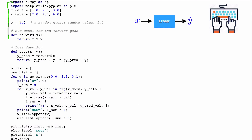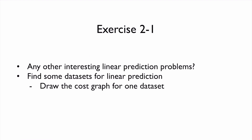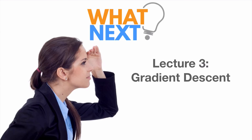This is our entire program — hopefully it's straightforward to understand how we implement this using simple Python and how we compute the loss based on our equation. Before we move on to computing this automatically, there are a few exercises: try to identify other interesting linear prediction problems, get a data set, and draw the cost graph. In the next lecture, we'll talk about how to find the W value that gives the lowest cost automatically — this is called the gradient descent algorithm.